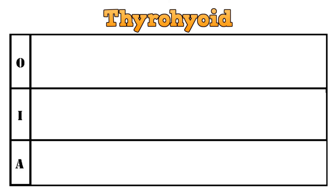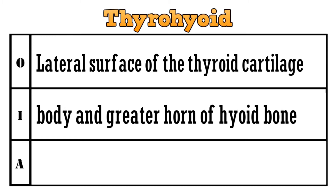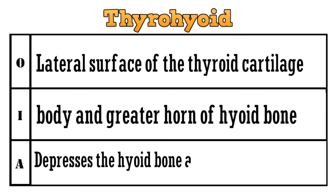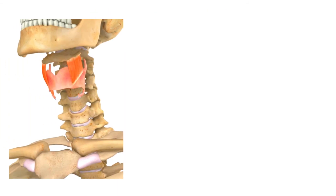The last infrahyoid muscle is the thyrohyoid. It originates from the lateral surface of the thyroid cartilage and gets inserted to the body and the greater horn of the hyoid bone. The muscle depresses the hyoid bone and elevates the larynx. As you can see here, this is the point of origin of the muscle, that is the thyroid cartilage.